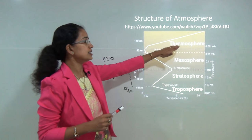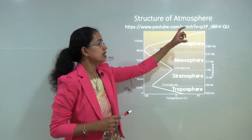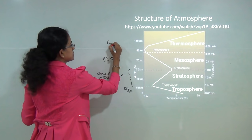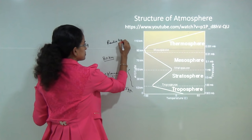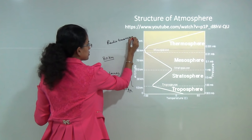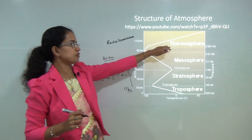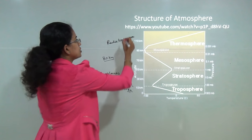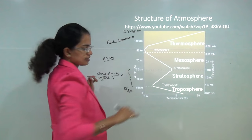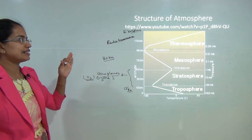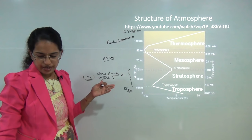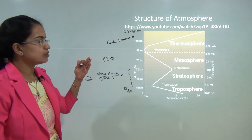The thermosphere is known for the ionosphere belt, as a result of which you have maximum radio transmissions occurring in this belt. Beyond the thermosphere is the exosphere, which extends to the outermost layers and mainly includes the light gases like helium and hydrogen that move up into outer space.